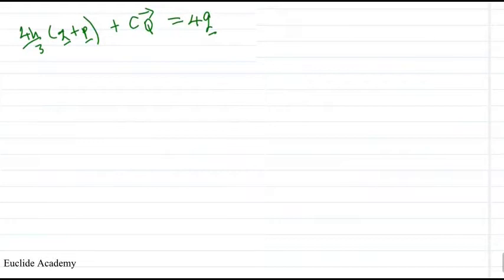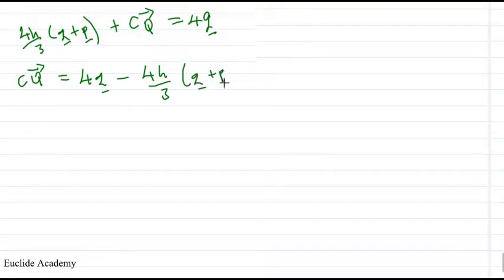So we're just going to say, so our CQ is going to be 4, this Q vector there, minus 4H over 3 times Q plus P.